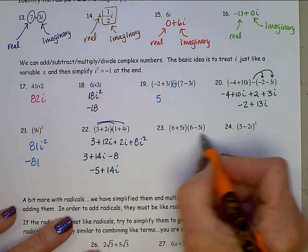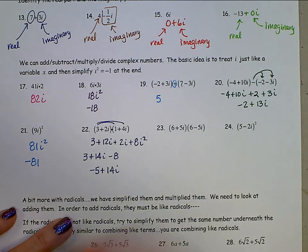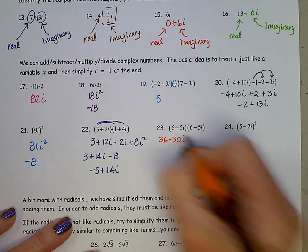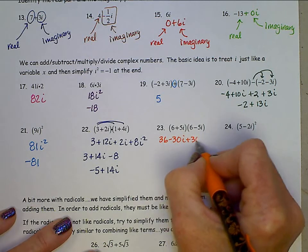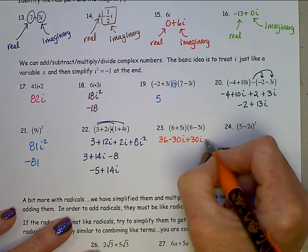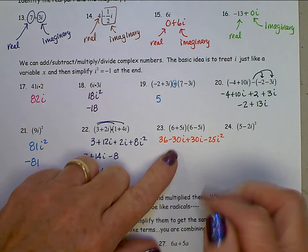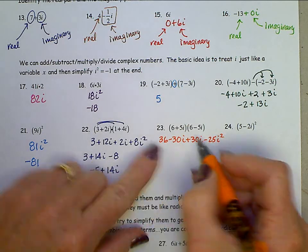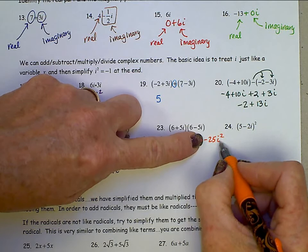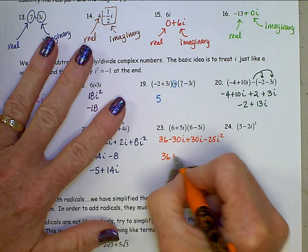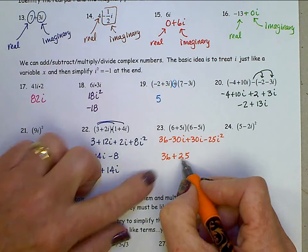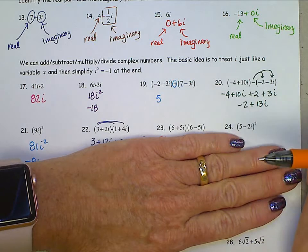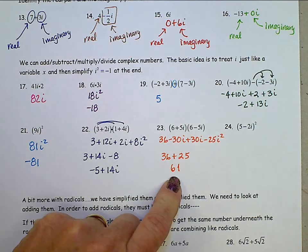For (6 plus 5i)(6 minus 5i), we distribute through: 6 times 6 is 36, 6 times negative 5i is minus 30i, 5i times 6 is 30i, and 5i times negative 5i is minus 25i squared. Combining like terms — the negative 30i and 30i subtract out — leaving 36 minus 25i squared. i squared is negative 1, so this becomes 36 plus 25, which is 61. Isn't that cool? You start multiplying two complex numbers and sometimes end up with something completely real.